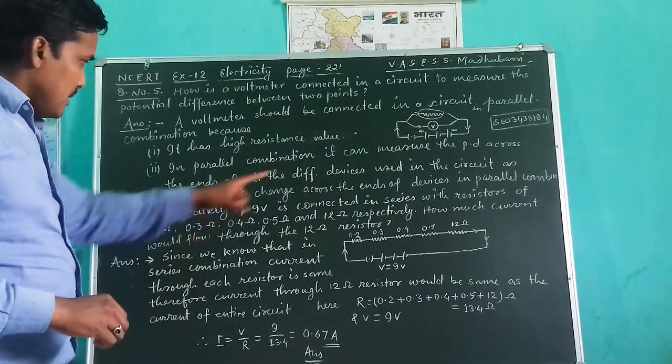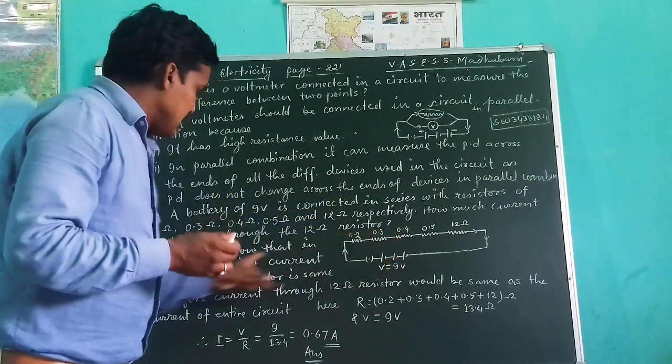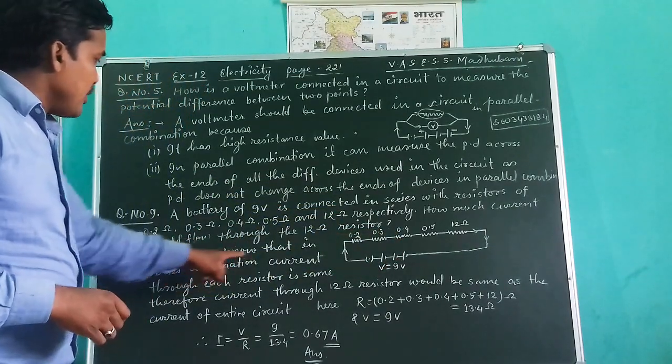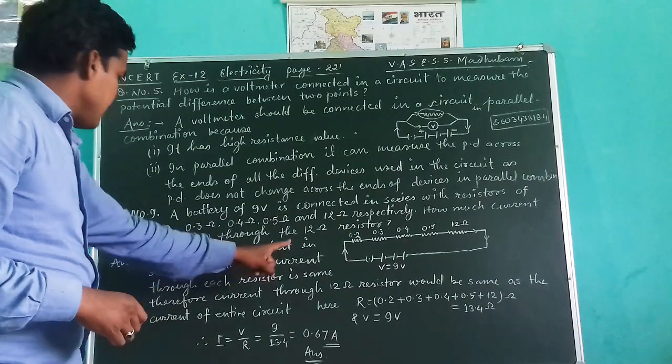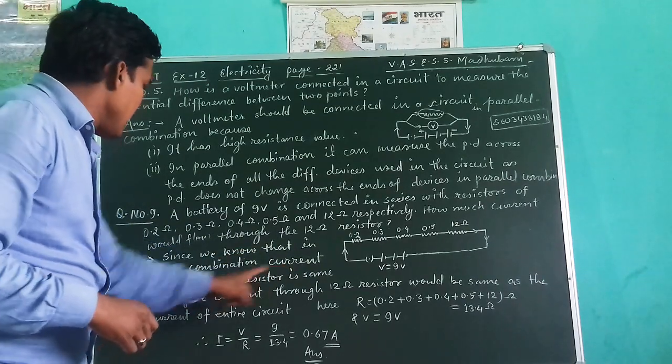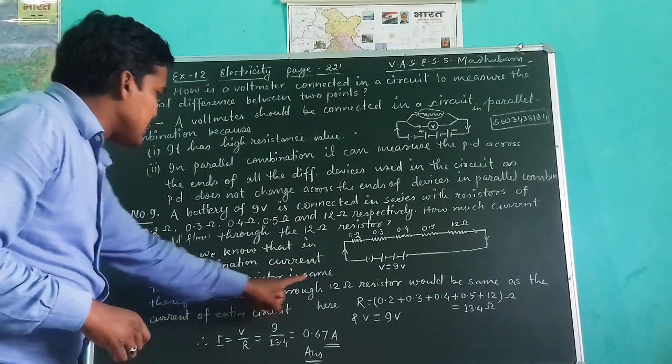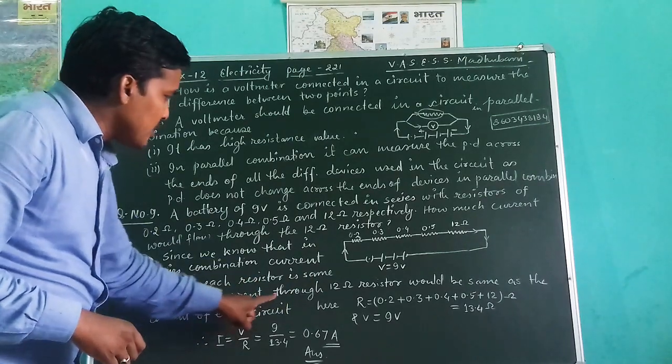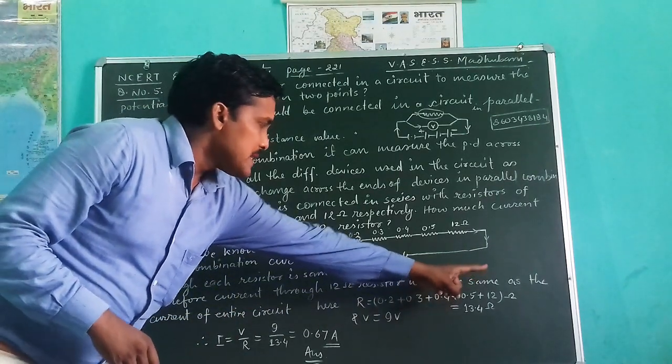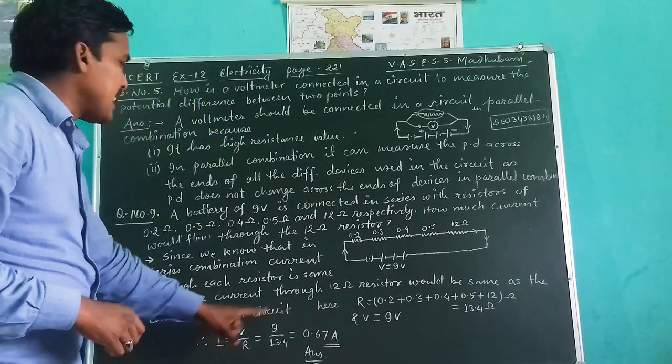Since we know that in series combination, current through each resistor is same. Therefore, current through 12 ohm resistor would be the same as the current of entire circuit.